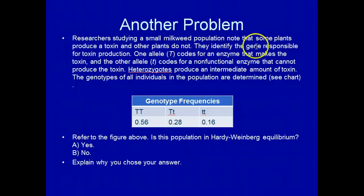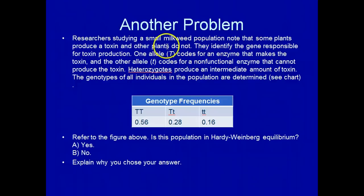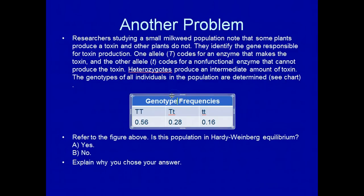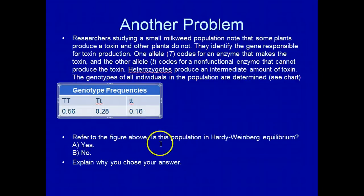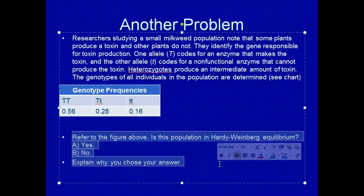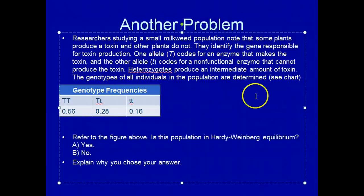Let's work through another problem. Researchers studying a small milkweed population know that some plants produce a toxin and others do not. One allele, T, codes for an enzyme that makes a toxin; the other allele, little t, codes for a non-functional enzyme. Heterozygotes produce an intermediate amount of toxin. The genotypes of all individuals in the population are determined. Is this population in Hardy-Weinberg equilibrium?